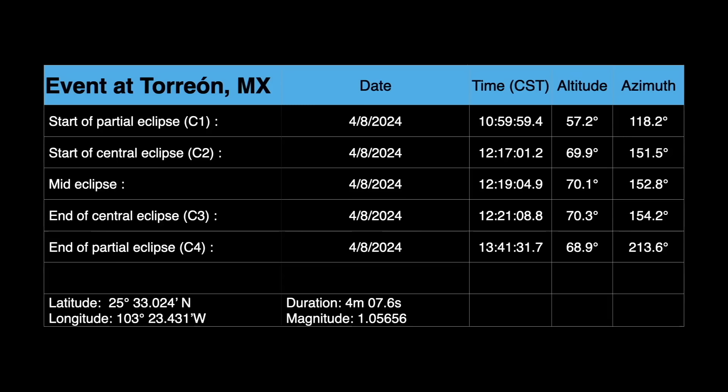Totality at this location lasts for 4 minutes and 8 seconds. The shadow then moves along to our other primary location in Junction, Texas. I'm also showing the altitude of the sun. Zero degrees is the horizon and 90 degrees is directly overhead.